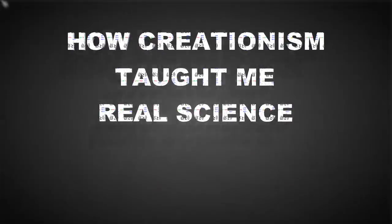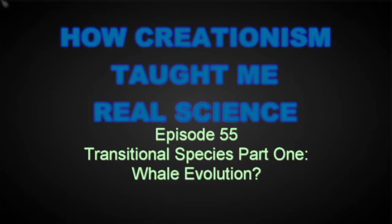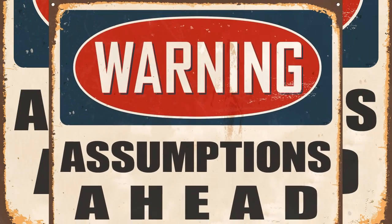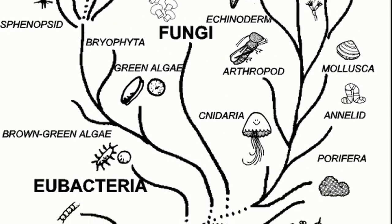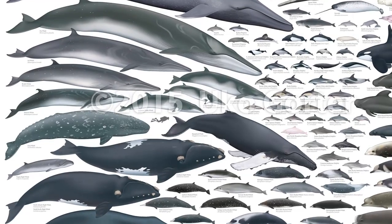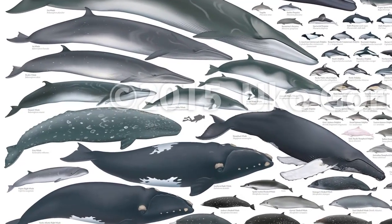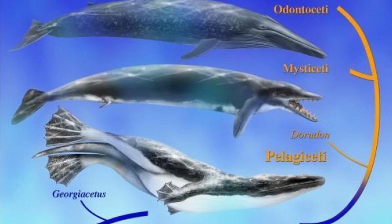I just had to investigate. In science, an assumption is not necessarily a weakness — in fact, it's how a theory is tested. The theory of universal common descent states that all living organisms on this planet share a common ancestor. Because whales and all other cetaceans are mammals, assuming common descent, we can predict that we should find several species in the fossil record demonstrating transitional features between land mammals and whales — and we should expect to see them appear in chronological order.